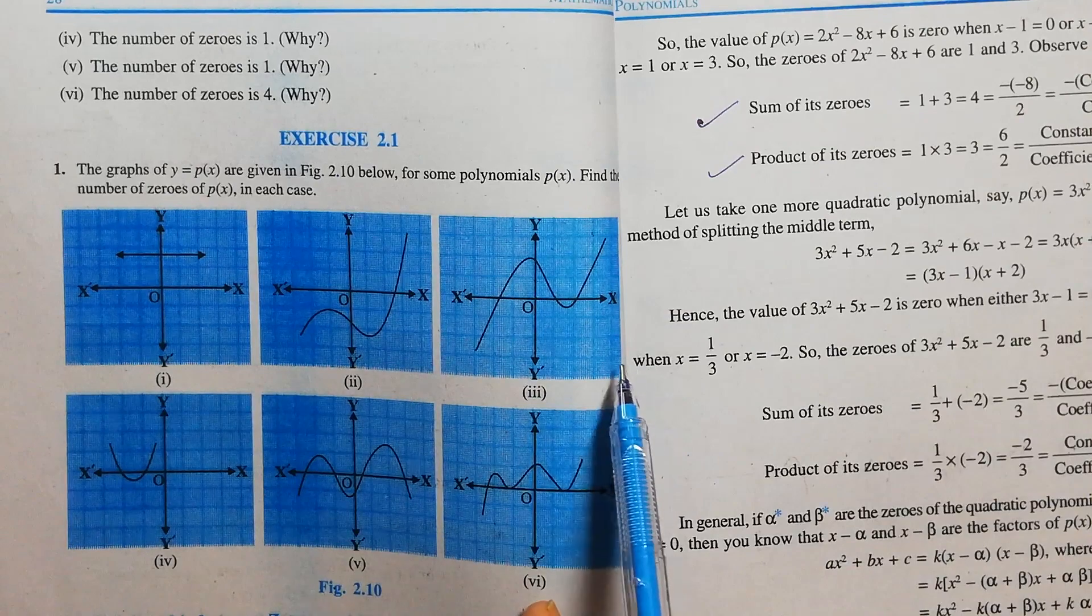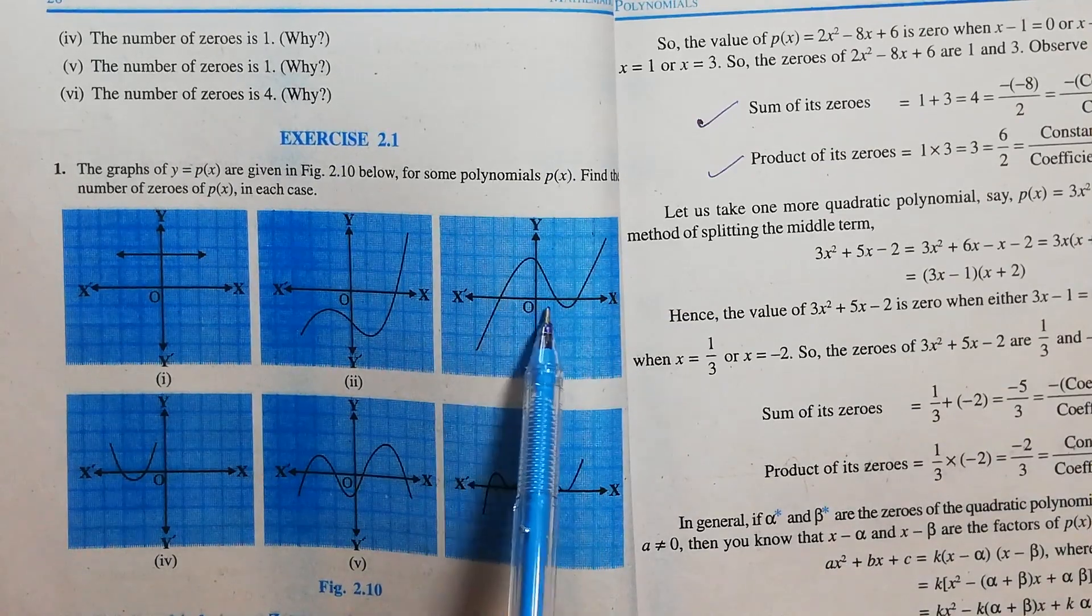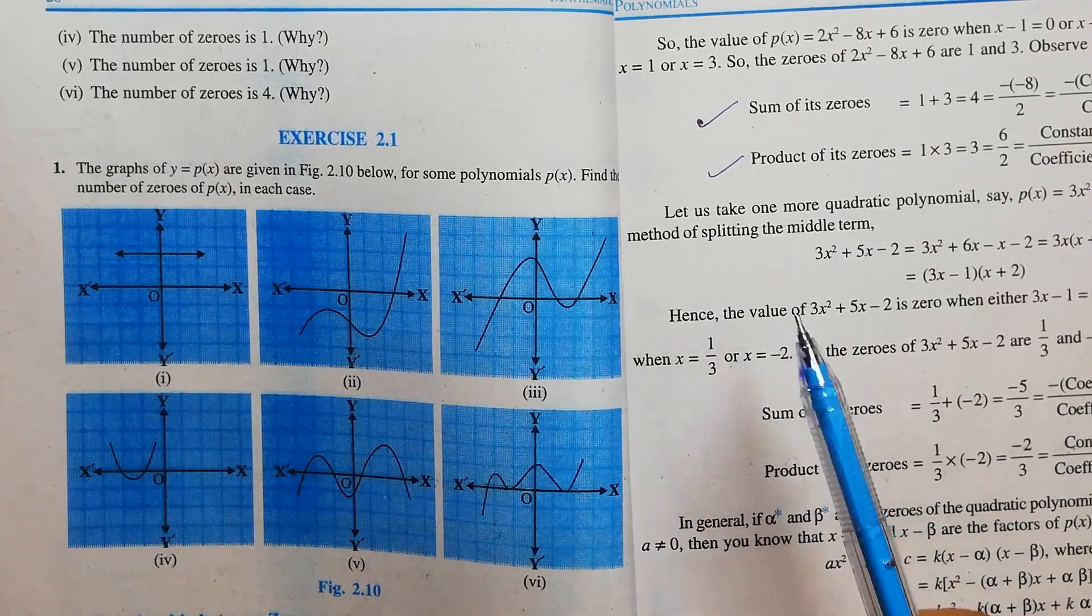Question number 3. Here we can see that the graph intersects the x-axis at 1, 2, 3 points. So, the number of zeros equals 3.